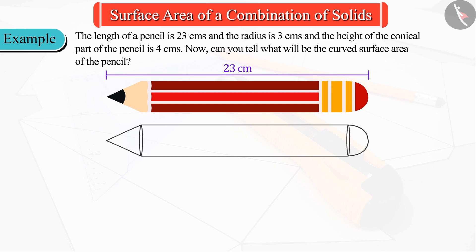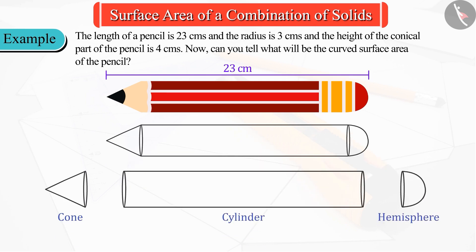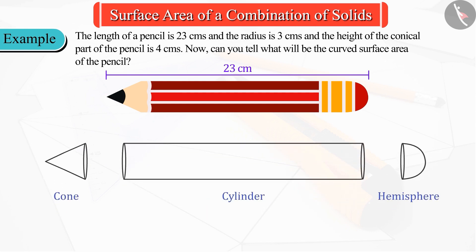But if we look at the figure carefully, we can say that its front part is a cone, middle part is a cylinder, and the lower part is a hemisphere.